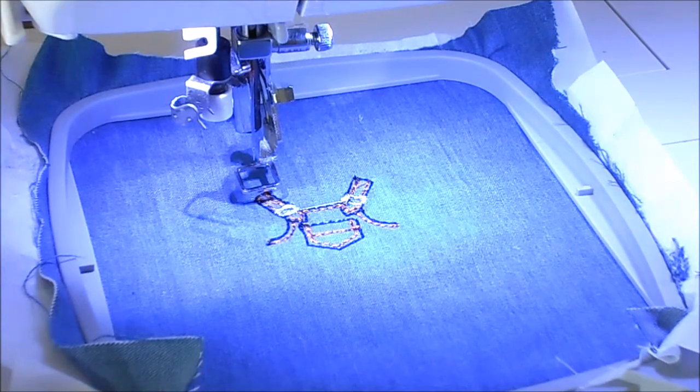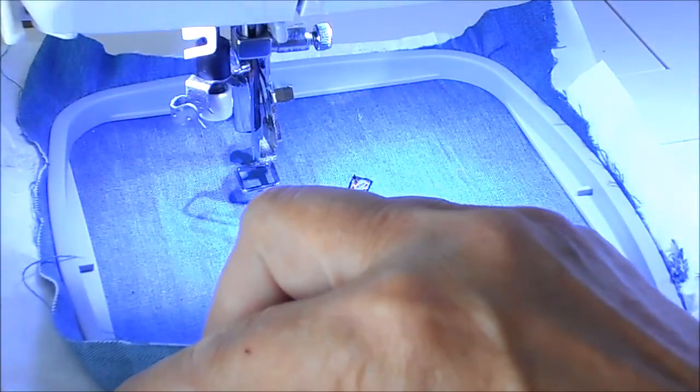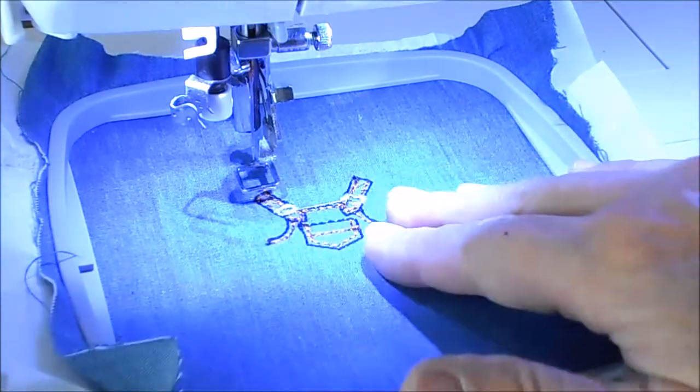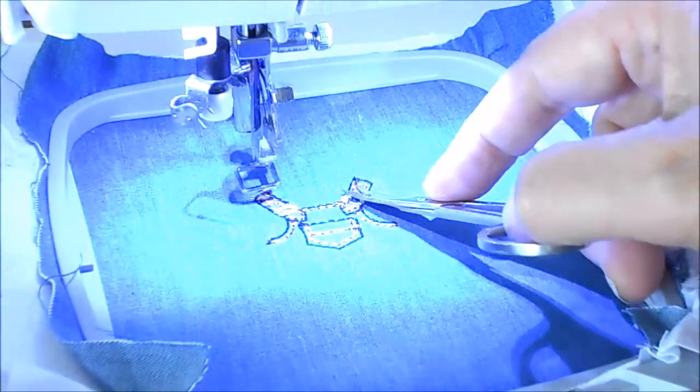To sew paw bunny overalls, first I hooped a piece of lightweight cotton denim fabric along with a piece of tearaway stabilizer, then sewed all but the last color of the design. I'm going to trim some threads here.